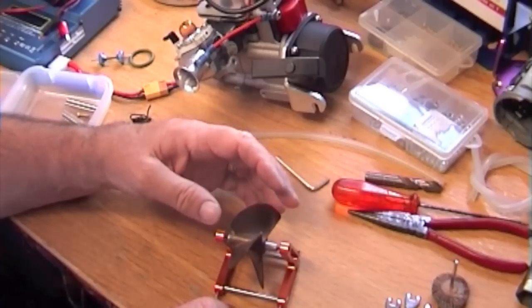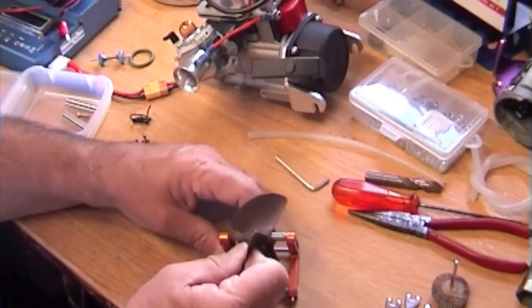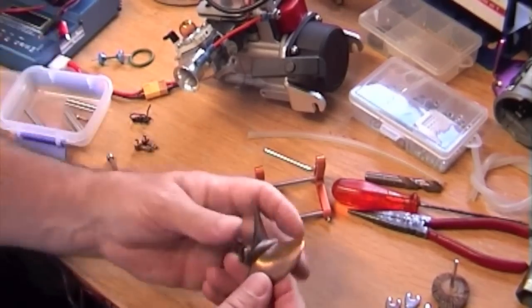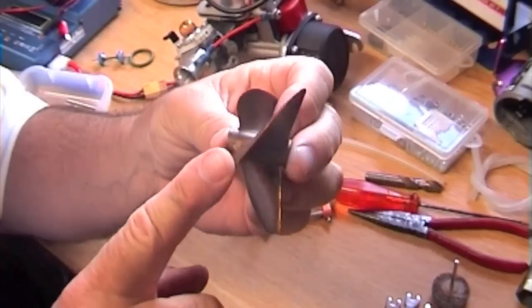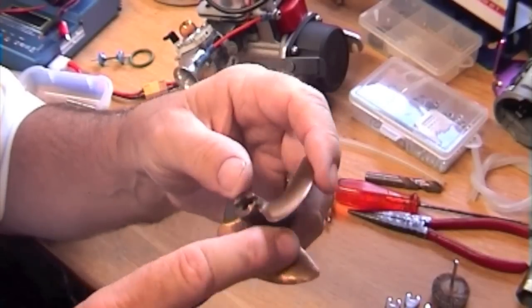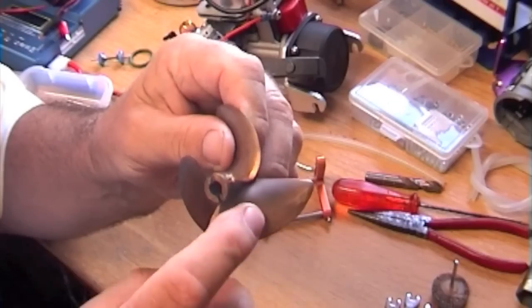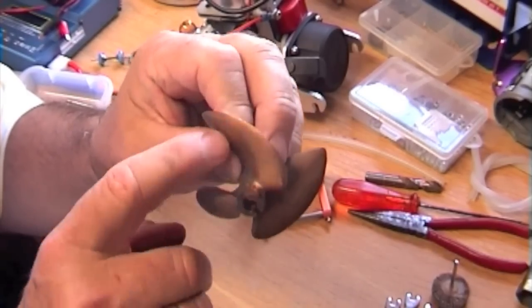Now the important bit here is if you want to file off part of the propeller, you must do it in this way. Do the back. Okay. The back of the blade itself. And keep taking off very small amounts with a file until you get the propeller to balance properly.